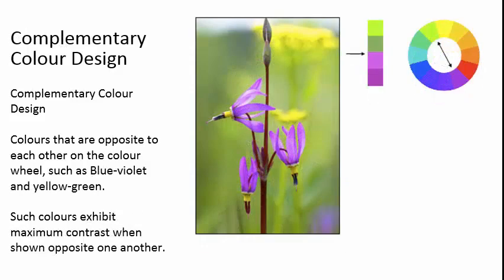Contrasting with that is complementary color design. You'll see the green of the background and the violet of the flower are on opposite sides of the color wheel, and these exhibit contrast. You'll also see it if you see people with red hair — they often wear green because orange and green are on opposite sides of the color wheel. You'll find complementary color design in the way people with red hair or perhaps green eyes often dress.